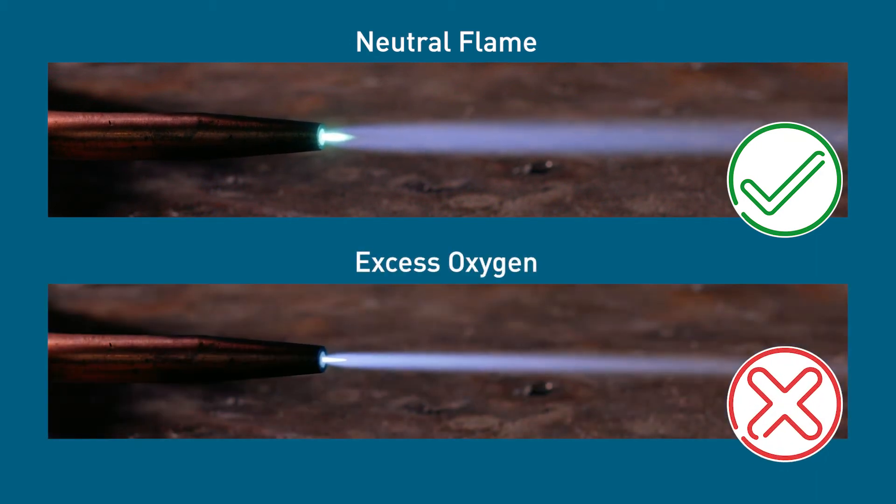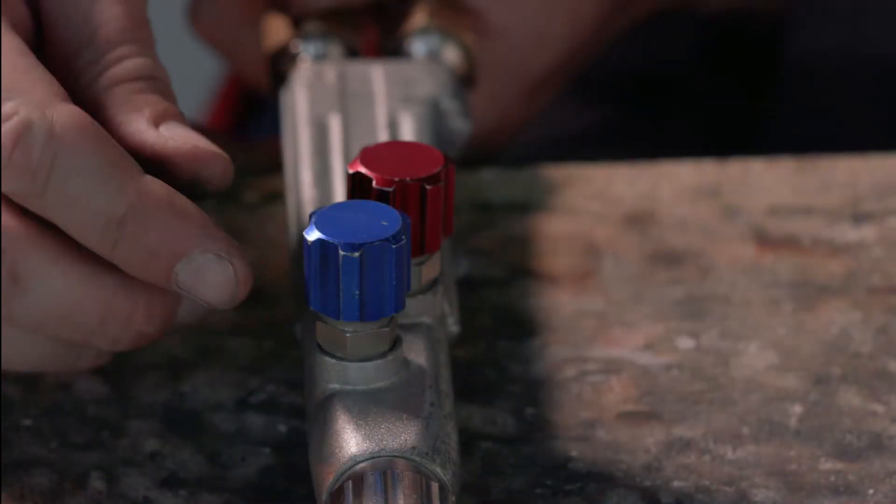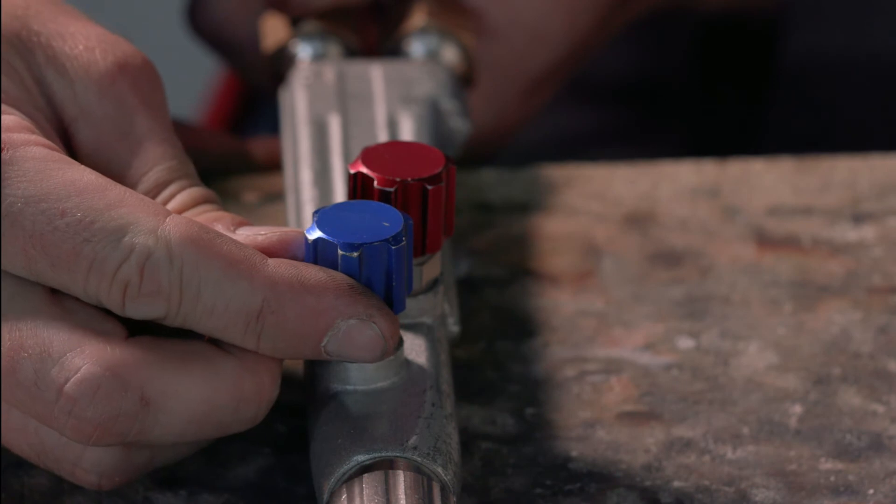If it's too sharp and ice blue, then there's an excess of oxygen. Reduce the oxygen by gently turning the blue tap on the torch in a clockwise direction.